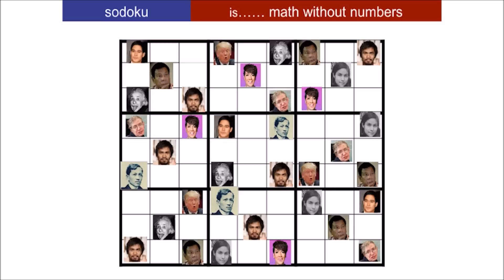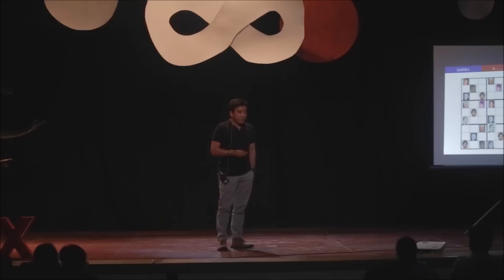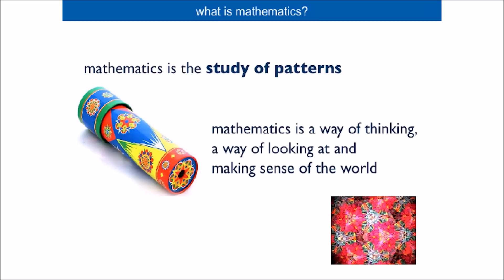The game is this. You use all the symbols so that you fill up the entire grid in such a way that every row, every column, every three by three square contains all the nine symbols. Sudoku is not about numbers. Sudoku is about patterns. And that is what mathematics is. Mathematics is a study of patterns.